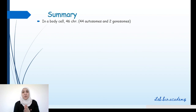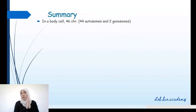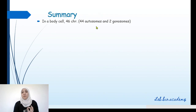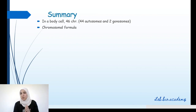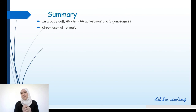Now let's sum up what we covered today. In a body cell — which means all cells of your body except sex cells — you will find 46 chromosomes. 44 of these chromosomes are called autosomes, and only 2 are gonosomes. These gonosomes are XX in a female and XY in a male, for a normal male and a normal female. To write the chromosomal formula: count the total number of chromosomes, write it down, put a comma, then write the gonosomes you have in the karyotype.